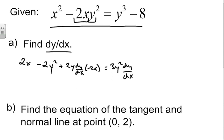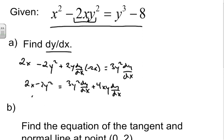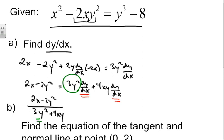The derivative of negative 8 is zero. Now we solve for dy/dx by isolating it. We have 2x minus 2y squared, and we move the dy/dx terms together: 3y squared dy/dx plus 4xy dy/dx. Factor out dy/dx, and our final answer is dy/dx equals (2x minus 2y squared) over (3y squared plus 4xy).